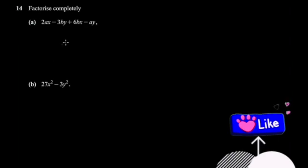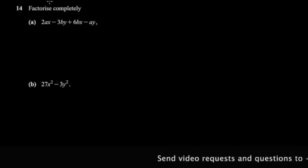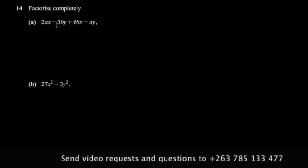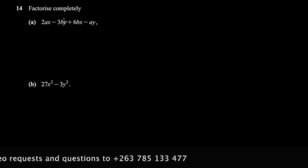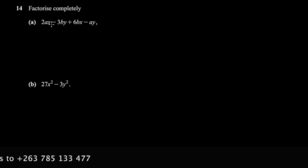We continue with our paper and this question is on factorization. We have this expression here and we're asked to factorize completely. I call it a train just because it's a train of terms — you have four terms here. Normally when you have four terms, it usually means you're dealing with a situation where you have to match the brackets.